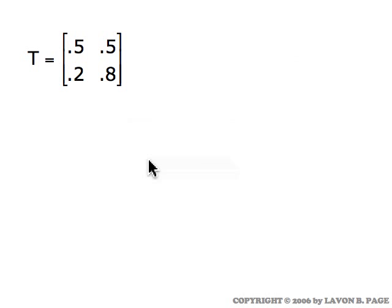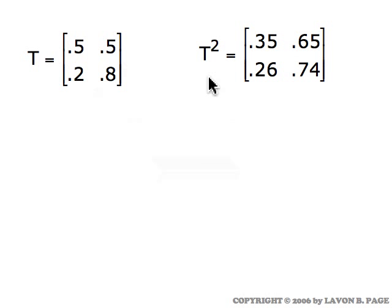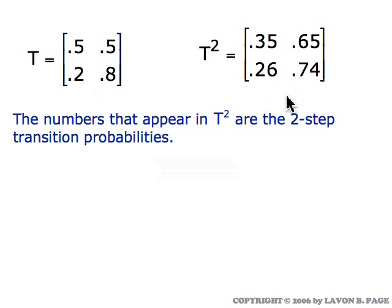Let's take this simple example: T, a two-by-two matrix. Notice that it is a transition matrix in that the rows add up to one — that's required. T squared is an easy calculation to compute, which is shown here. The numbers that appear in T squared are the two-step transition probabilities.